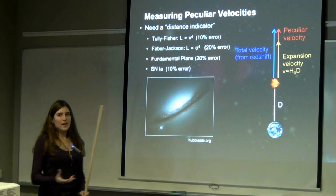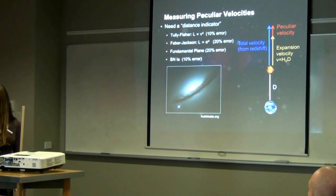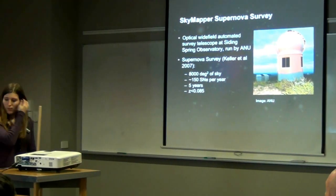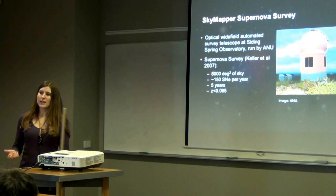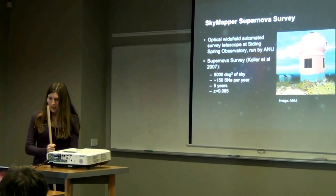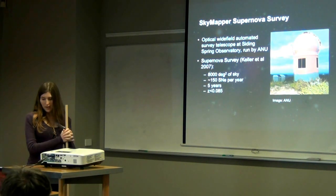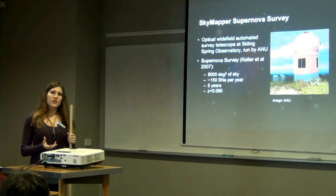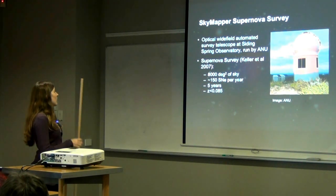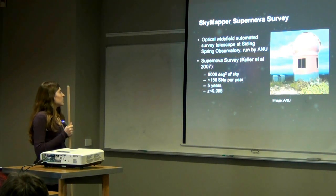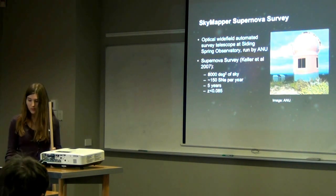I'm working partly with the SkyMapper Supernova Survey. SkyMapper is an optical telescope at Siding Spring Observatory, and it will be conducting a supernova survey over the next five years, measuring about 150 supernovae per year over a total of 8,000 square degrees of sky. This will be a really good survey for doing peculiar velocity measurements.